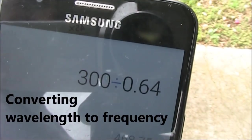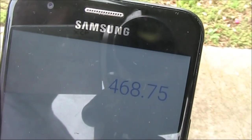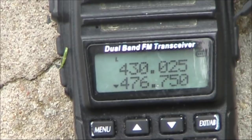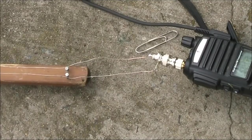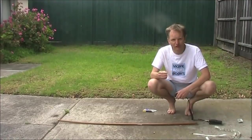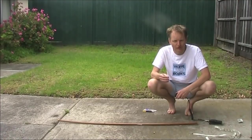300 divided by 0.64 is about 469 megahertz. The actual frequency, just below 477. So with this crude instrument, we were out by less than 2%. Just to demonstrate that wasn't a fluke, we'll now try things again on a different frequency.